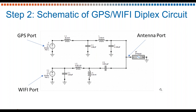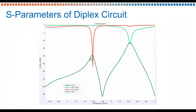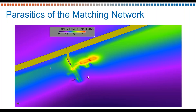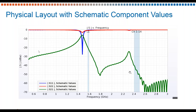Step two: we will use the schematic editor to design our matching network. You can see we've created a diplexer circuit for GPS and Wi-Fi. Both ports are loaded with 50 ohms — we have the GPS at the top, Wi-Fi at the bottom, connected to the antenna port here with the FDTD block. Without having to run a new simulation, we can see how our antenna will perform with this schematic design. We have good isolation between GPS and Wi-Fi at the GPS frequency and these results look great. But there is one key element we have to consider, which is the parasitics from the topology.